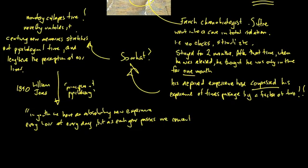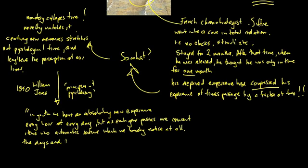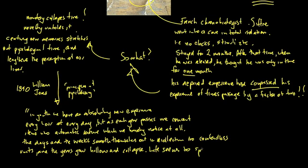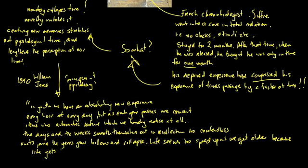But as you get older, I guess that time seems to pass by quicker and it's almost like you're on an exponential curve speeding right through the universe. His comments, William James, is that in youth we have an absolutely new experience every hour, every day. But as each hour passes, we convert items into automatic routine, which we hardly notice at all. So the days and the weeks kind of smooth themselves out. And they smooth out into contentless units and the years grow hollow and collapse. It's pretty profound and probably a little bit overdramatic, but I feel that this is certainly something that we can see psychologically with memory. Life seems to speed up as we get older because life gets less interesting in a lot of ways, less memorable. And so that's something to think about because that's why time seems to just disappear.